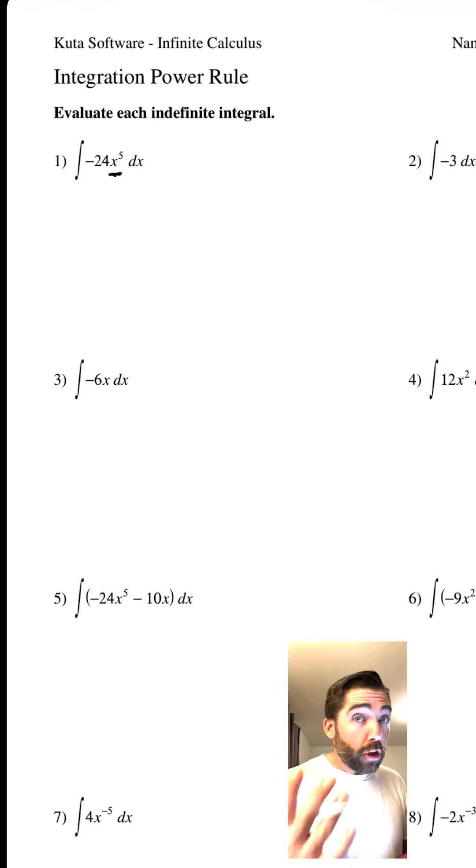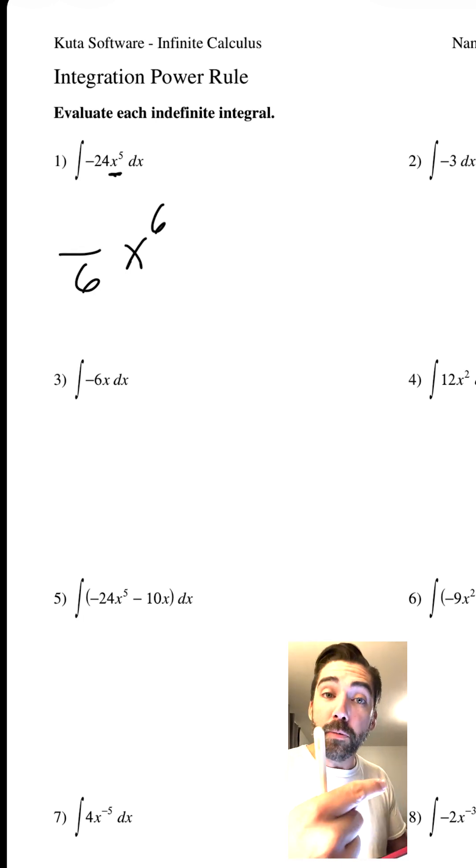For learning how to do an integral, we're going to take this exponent of 5 and make it x to the sixth, because it's the opposite of a derivative. We need to divide by 6, because when we take a derivative, we multiply by 6.